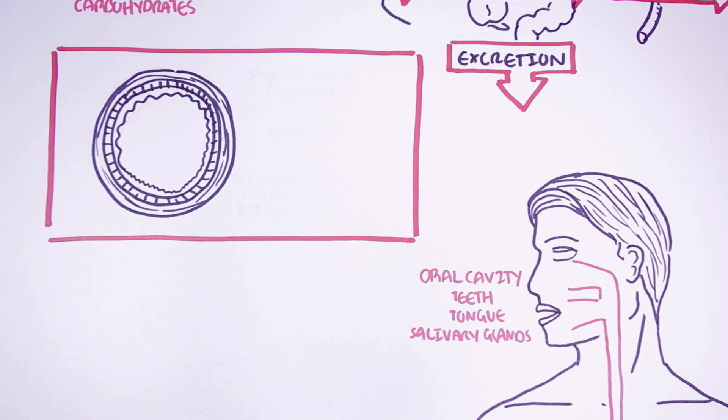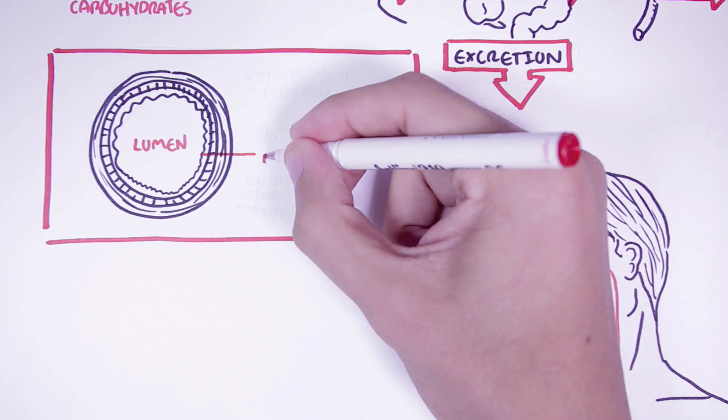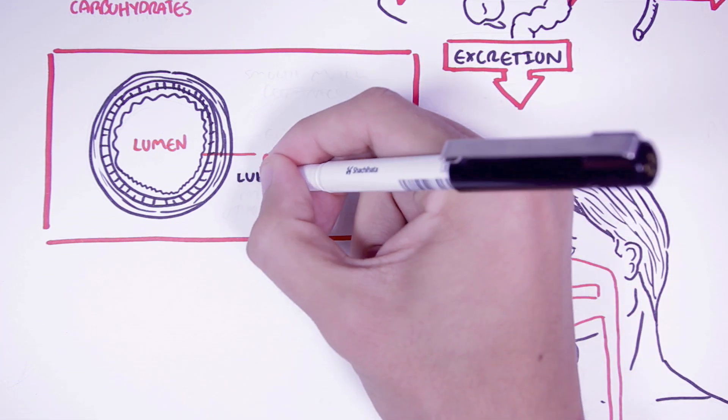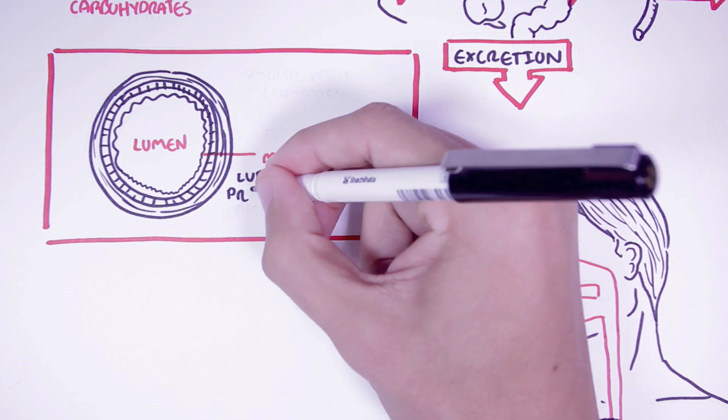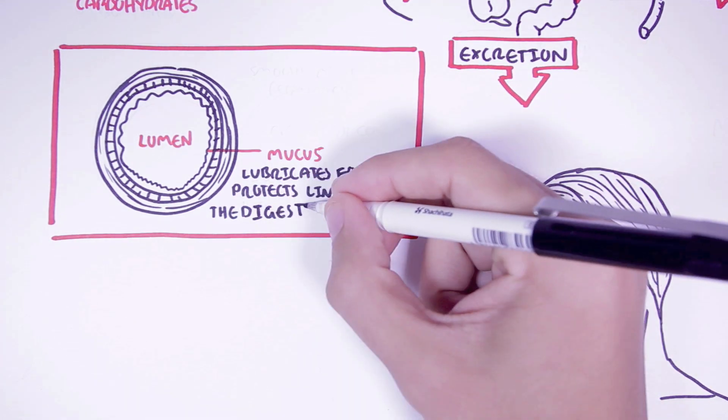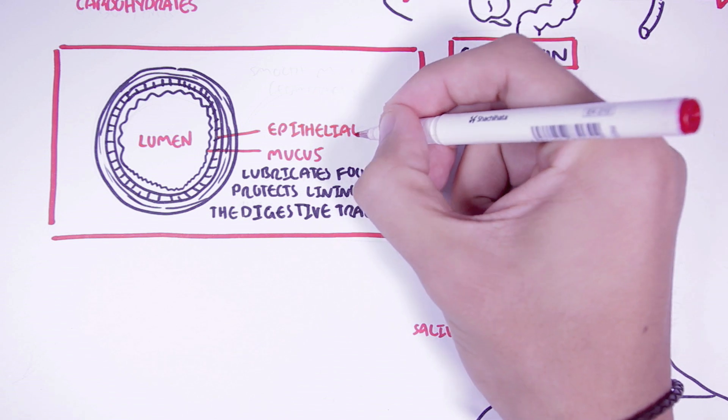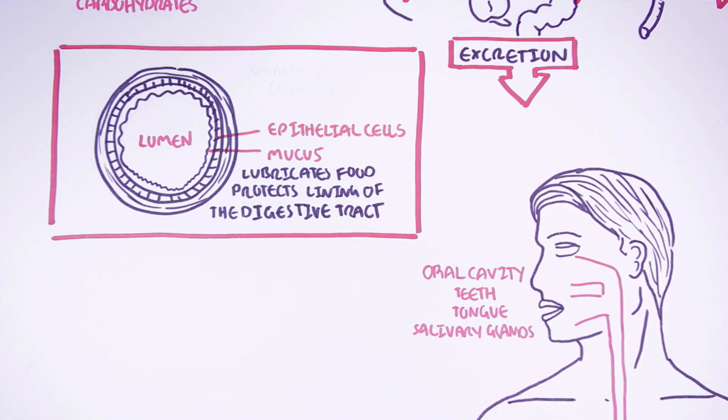The lumen is the inside space of the digestive tract. The first layer is mucus and we find it around the lumen. Mucus lubricates the food and also protects the lining of the digestive tract. Then you have the epithelial cells, the lining of the digestive tract, that forms the tract itself. Some of these cells are what produce and secrete mucus.